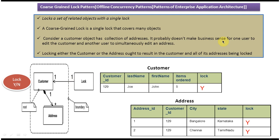Consider the customer object has a collection of addresses. It probably doesn't make business sense for one user to edit the customer while another user simultaneously edits the address. If user A is editing the customer information and user B tries to edit the address information, it will ultimately affect the customer data. One user should be allowed to edit both customer and address information, and during that time another user should not be able to change either.